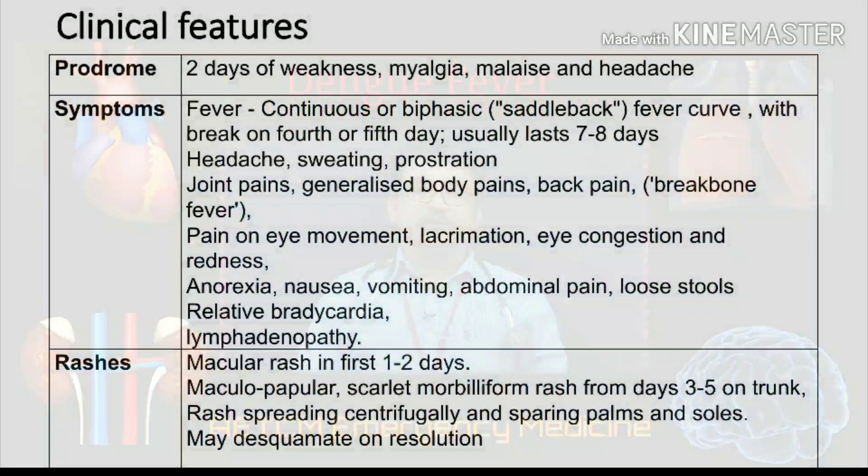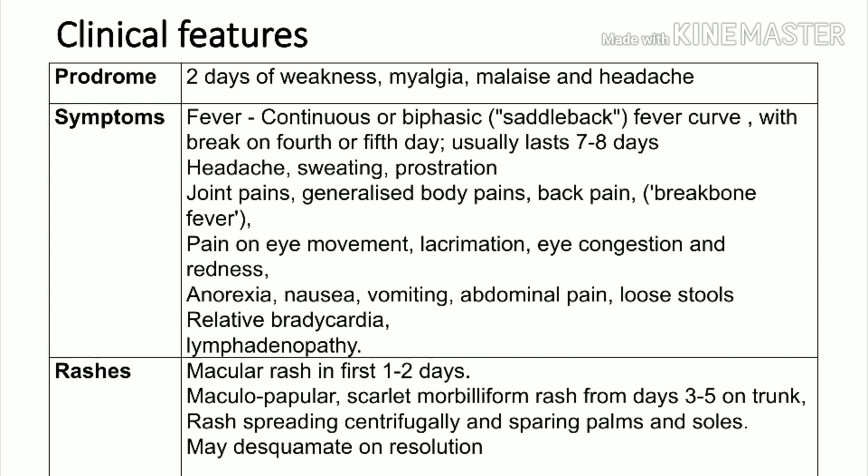The prodromal phase lasts 2 to 3 days, where the patient will have severe weakness, myalgia, and headache, but no fever during that period. The classical fever in dengue is described as a biphasic or saddleback type — after 2 days of prodrome, the patient has 2 to 3 days of fever, then on days 4 and 5 fever subsides, and then fever returns. This is called saddleback fever. Other features include severe headache and sweating.